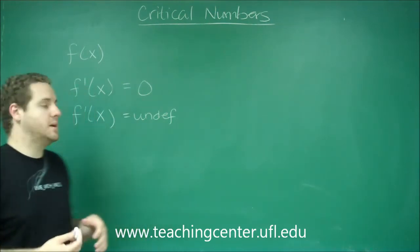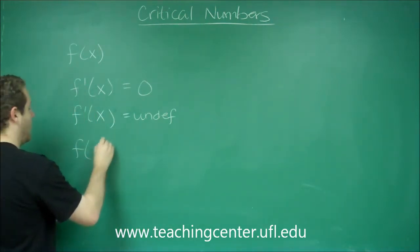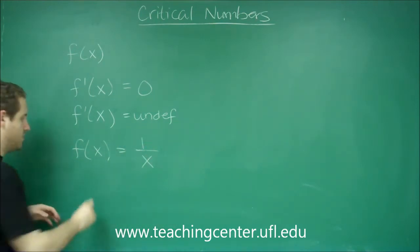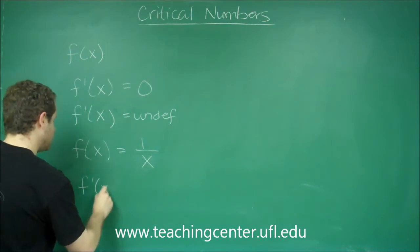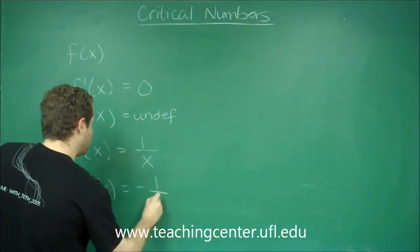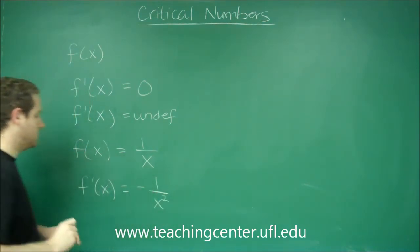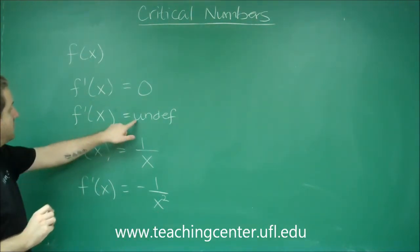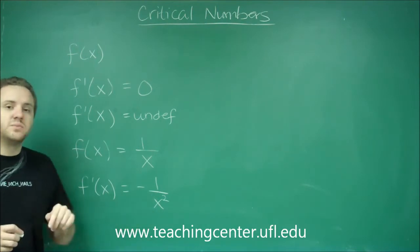So let's do a quick example. Let's say our function f(x) was 1 over x. By doing the derivative, you would get negative 1 over x squared. You can see here that this derivative can never be 0, but it definitely can be undefined if x were to be 0.